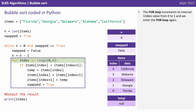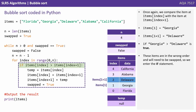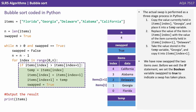The for loop increments its internal index value from 0 to 1 and we enter the for loop again. Once again we compare items[index] and items[index+1], so that's Georgia and Delaware. Georgia is greater than Delaware — these items are in the wrong order and will need to be swapped. So we enter the if statement. The actual swap is performed as a three-stage process in Python: we copy the value currently held in items[index] — Georgia — out to a temporary variable, then replace items[index] with Delaware, and finally copy Georgia from the temporary variable into items[index+1]. We've effectively swapped the two items over.